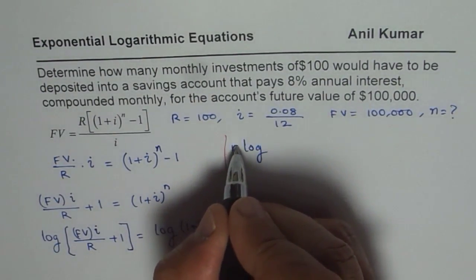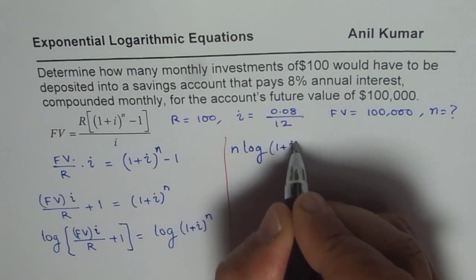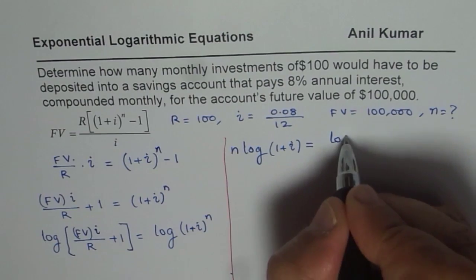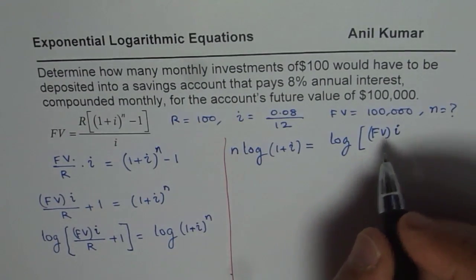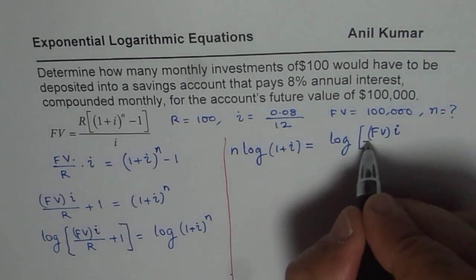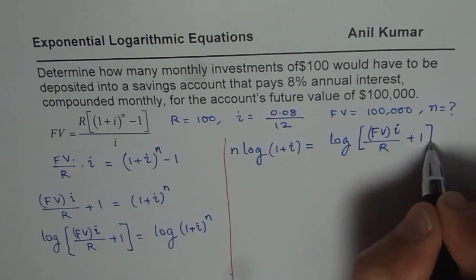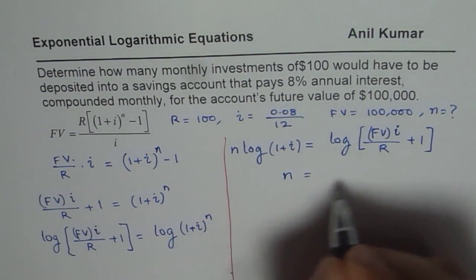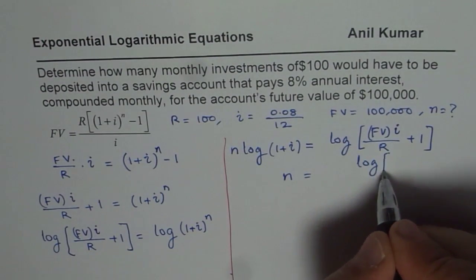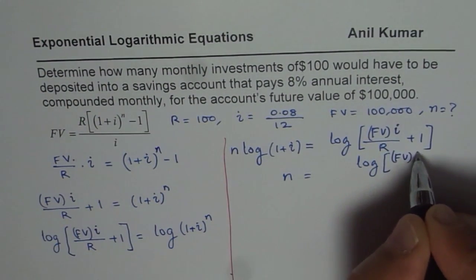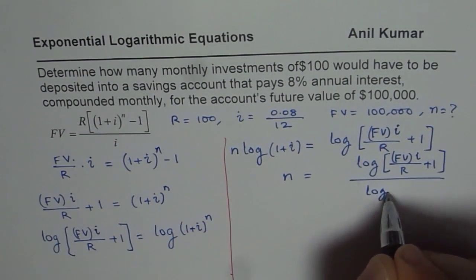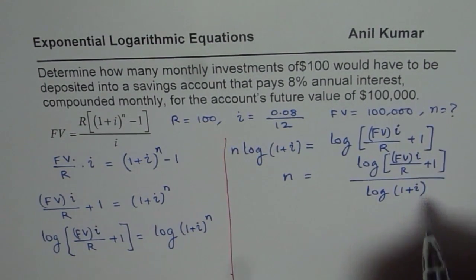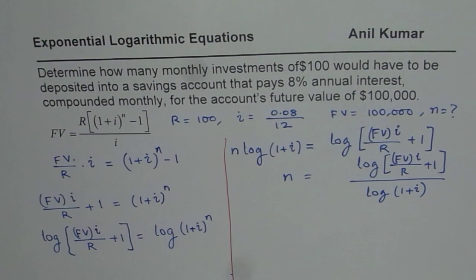We have N times log(1+i) equals log of FV times i divided by R plus 1. Now we can find N as the ratio of these two. So N equals log of FV times i divided by R plus 1, all divided by log(1+i). That is how you find N for such examples.